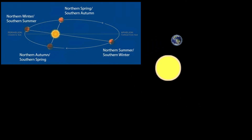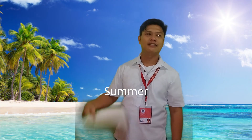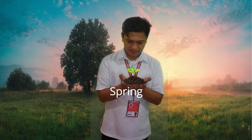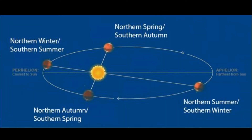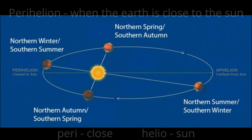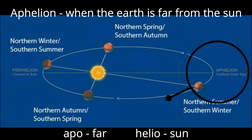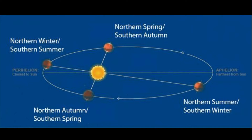Due to revolution, the Earth experiences seasons as shown in the illustration. Perihelion is when the Earth is close to the Sun — peri means close and helio means sun, so perihelion means close to sun. While aphelion comes from the Latin word apo, meaning far — therefore, aphelion means far from the sun.